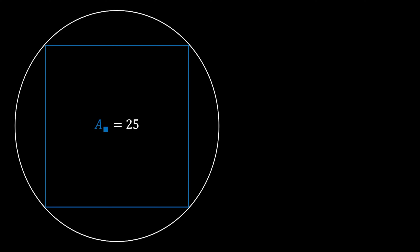Let's draw a circle and inscribe a square in it. The area of this blue square is equal to 25 square units. Now let's inscribe a small red square between the bottom side of the big square and the circumference of the circle. What is the area of this small red square?